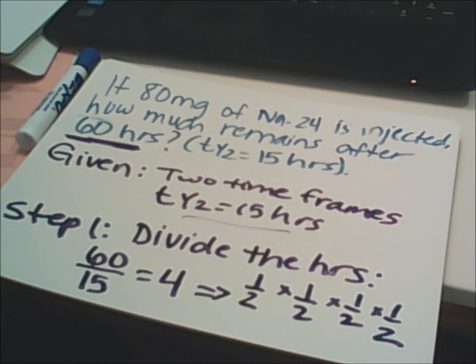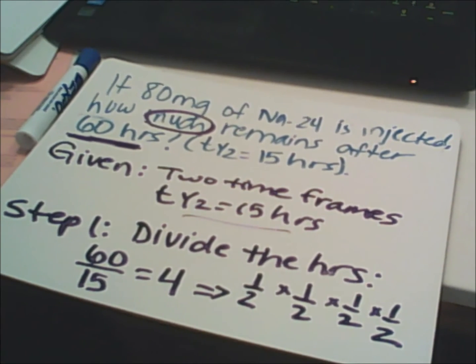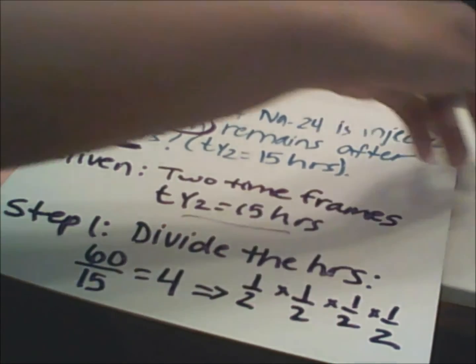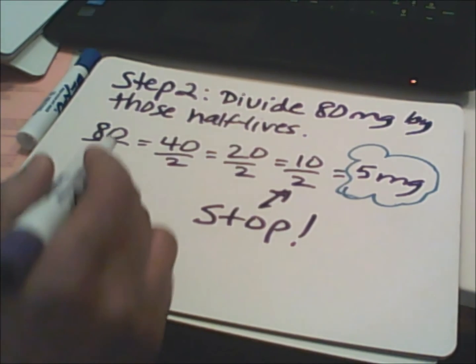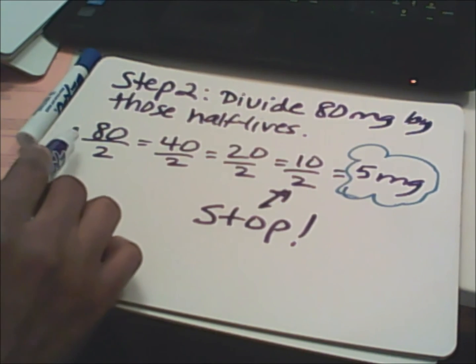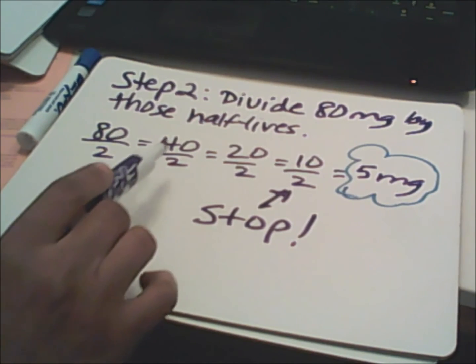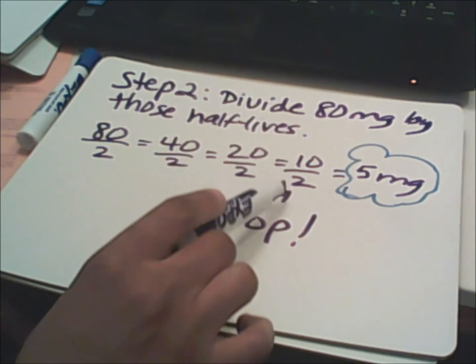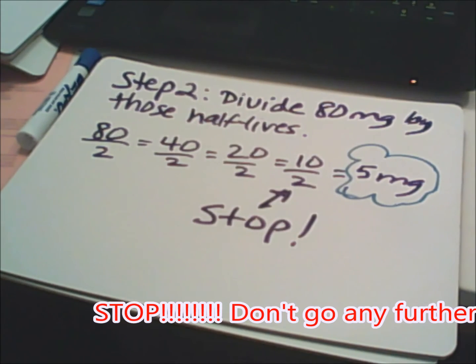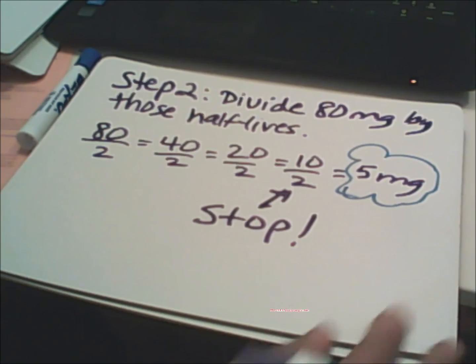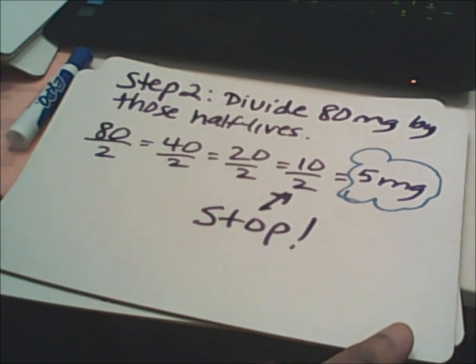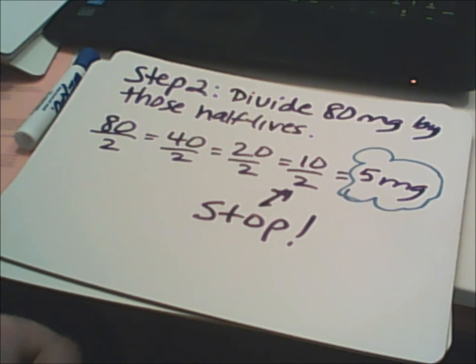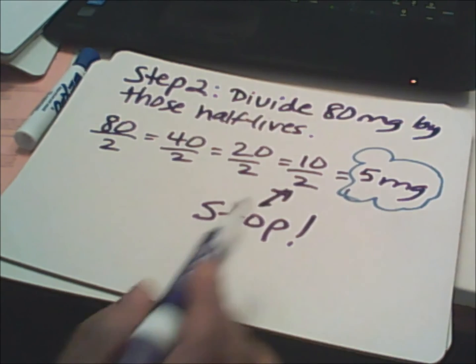Step two is to take those four half-lives and divide out your starting amount. So: 80 milligrams divided by 2 gives 40, divided by 2 gives 20, divided by 2 gives 10, divided by 2 gives 5 milligrams. Stop there because you have four half-lives, meaning you divide by two exactly four times. Therefore you get 5 milligrams remaining in the body after those four half-lives.